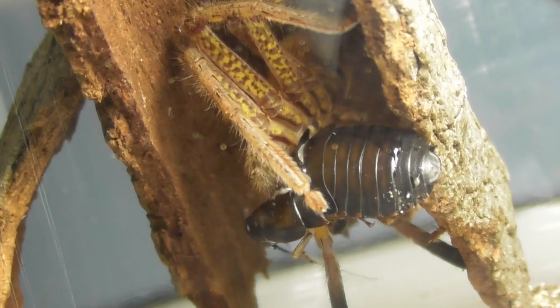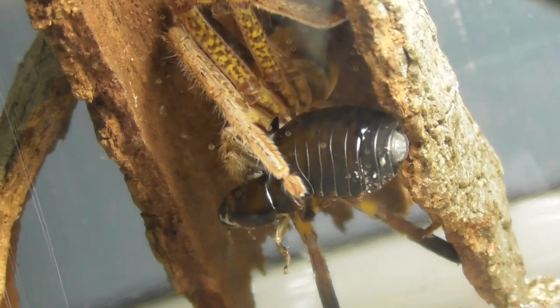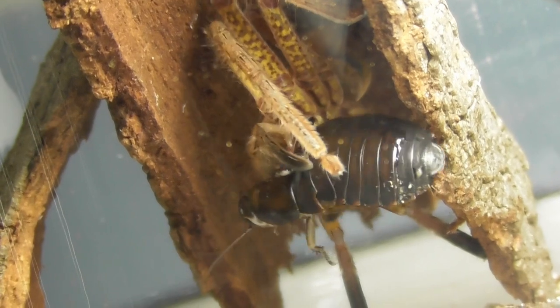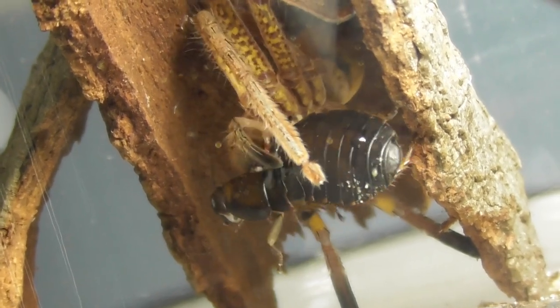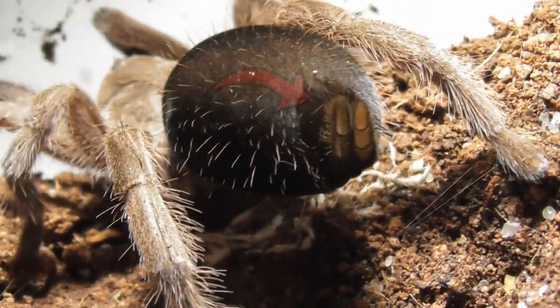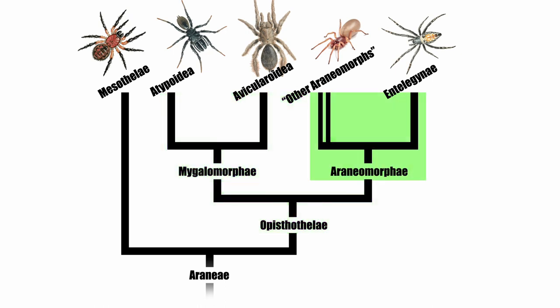The prefix opistho means rear, so the name Opistothelae refers to the fact that, unlike the Mesothelae, these spiders have spinnerets situated more towards the rear of the opisthosoma. The Opistothelae are split into two infraorders: the Mygalomorphae and the Araneomorphae.